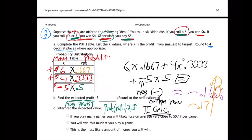So my answer is negative 0.17. Questions on that? So if you're going to interpret it — it said find the expected profit — you would actually lose 17 cents. That's the average amount of money you're going to lose every time you play this game. On average, you're going to lose 17 cents per game. That's what you should expect.